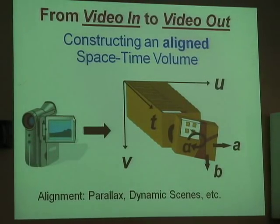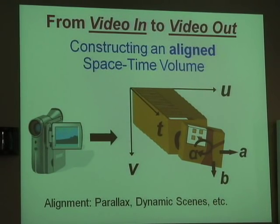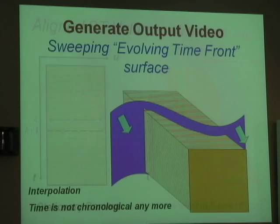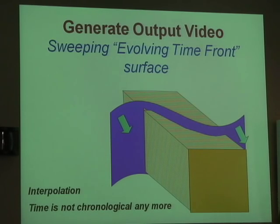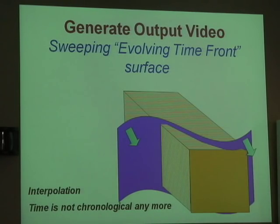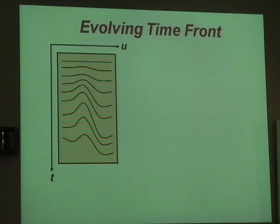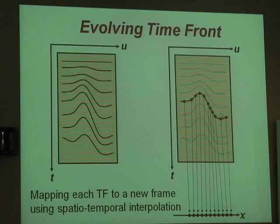All the approach is based on first taking the video and making it into a three-dimensional volume called a space-time volume. We create new images out of this space-time volume by running surfaces through it. We take a surface in this space-time volume; the surface cuts pixels, and whatever pixels it cuts, this becomes a new image. For the next frame, I move this surface and it cuts a new set of pixels. Each frame in the new video takes a collection of pixels — it cuts and creates a new image.